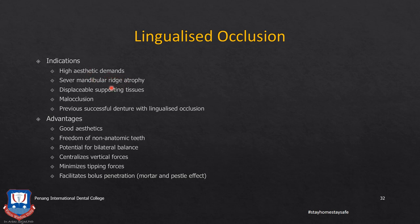Indications of lingualized occlusion include: high aesthetic demand; severe mandibular ridge resorption; displaceable supporting tissues such as thick mucosal biotype, flabby ridges, or traumatic ridges; malocclusion such as Class II or Class III relationships; and patients with a previous successful denture using lingualized occlusion. Even today in many European countries, lingualized occlusion is followed by many clinicians and denture technicians for the arrangement of artificial denture teeth.